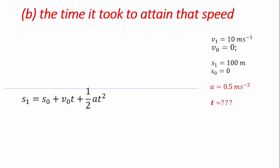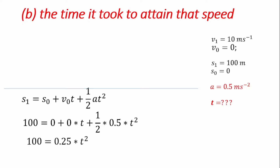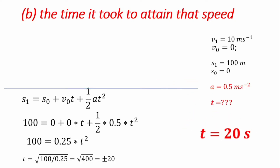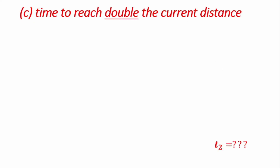If we decide to use the second formula to verify, inputting all the variables — x1, x0, V0, and A — and solving, we get the same answer: T equals plus or minus 20 seconds. Because time is always positive, the answer is plus 20, which matches what we found before. So our time is 20 seconds for the vehicle to attain that speed of 10 m per second.